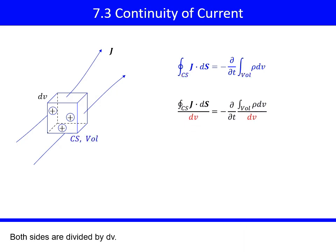Both sides are divided by dV. The left-hand side is the definition of the divergence of J. The right-hand side represents the change of charge in the local region. If this term is positive, it means that net positive charges are coming out of dV.